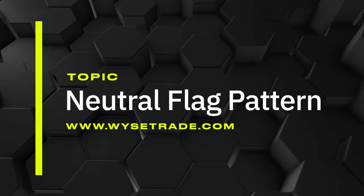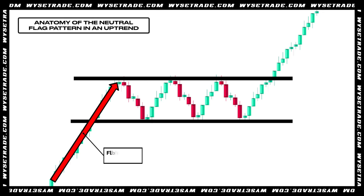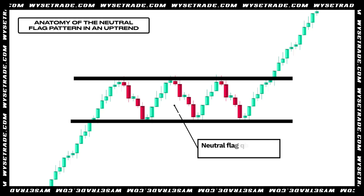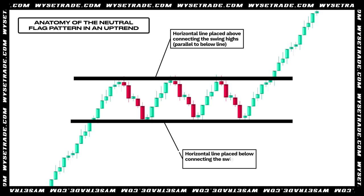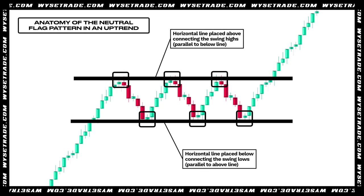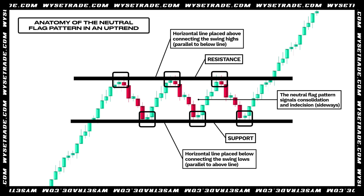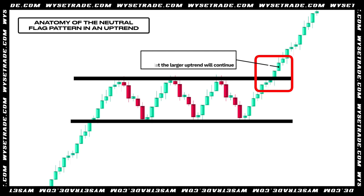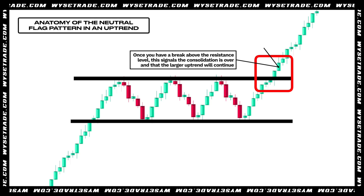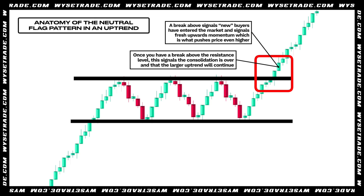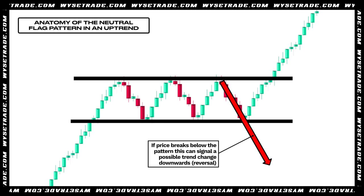Moving on to the neutral flag pattern. Here is the anatomy of the neutral flag pattern in an uptrend. You have your flag pull, which is a moving uptrend. You then have your neutral flag pattern, which is a horizontal channel. The neutral flag pattern has two parallel horizontal lines placed above and below connecting the swing highs and swing lows — also known as support and resistance. The neutral flag pattern signals consolidation and indecision. Once you have a break above the resistance level, this signals the consolidation is over and that the larger uptrend will continue — a break above signals new buyers have entered and fresh upwards momentum, which pushes price higher. If price breaks below, this can signal a possible trend change downwards.